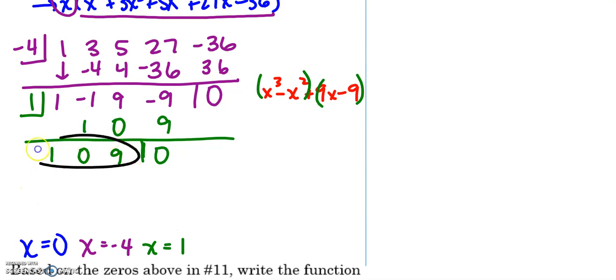And now I'm down to this, which would be x squared plus 9. And I'm trying to figure out what 0's that's going to give me, because I have the square root of an imaginary. This will be x equals positive 3i and x equals negative 3i.